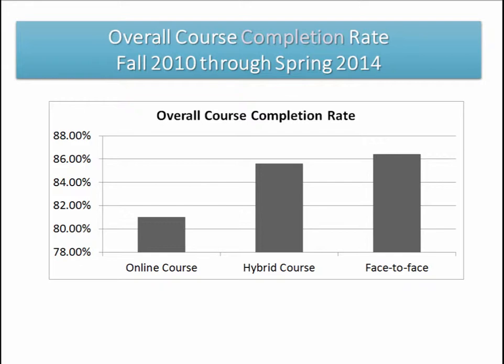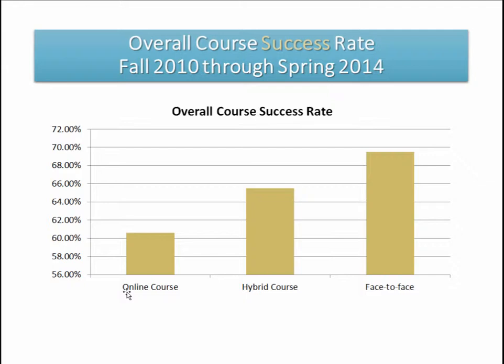I thought we would start by looking at some statistics from our college. The first slide shows course completion rate for fall 2010 through spring 2014. Face-to-face courses have a much higher completion rate than online courses, and hybrid is somewhere in the middle — actually a little bit closer to face-to-face. Looking at success rate over the same period, face-to-face students have the strongest success rate, online the lowest, and hybrid is in the middle.